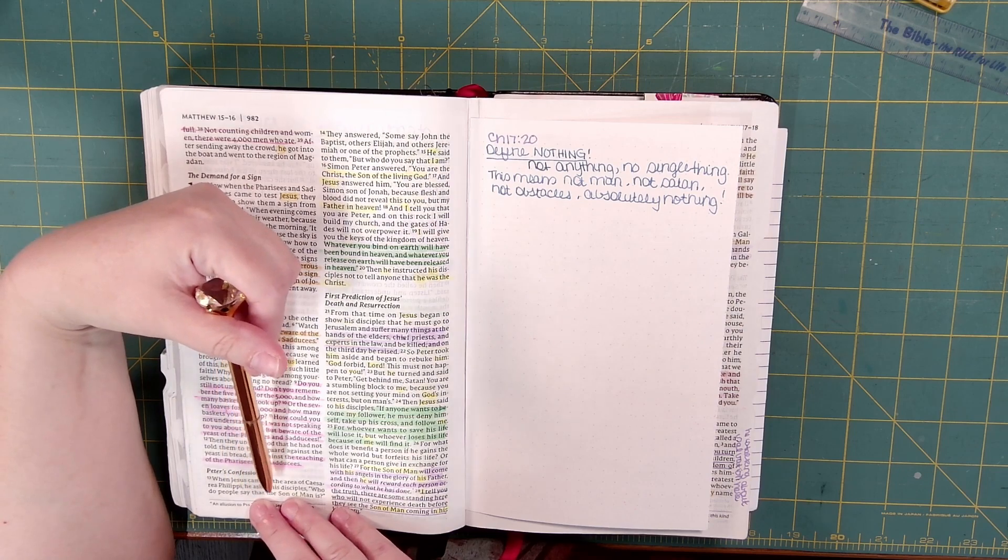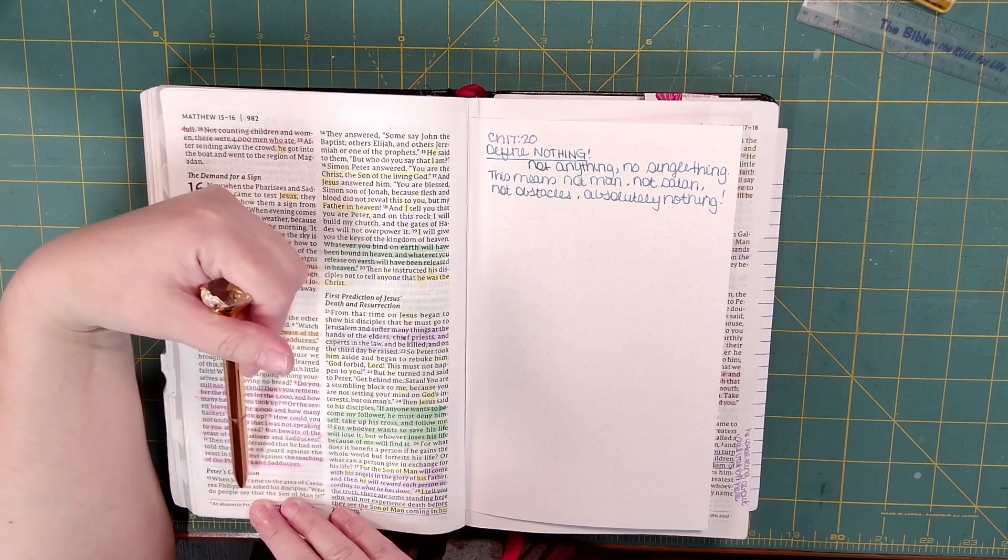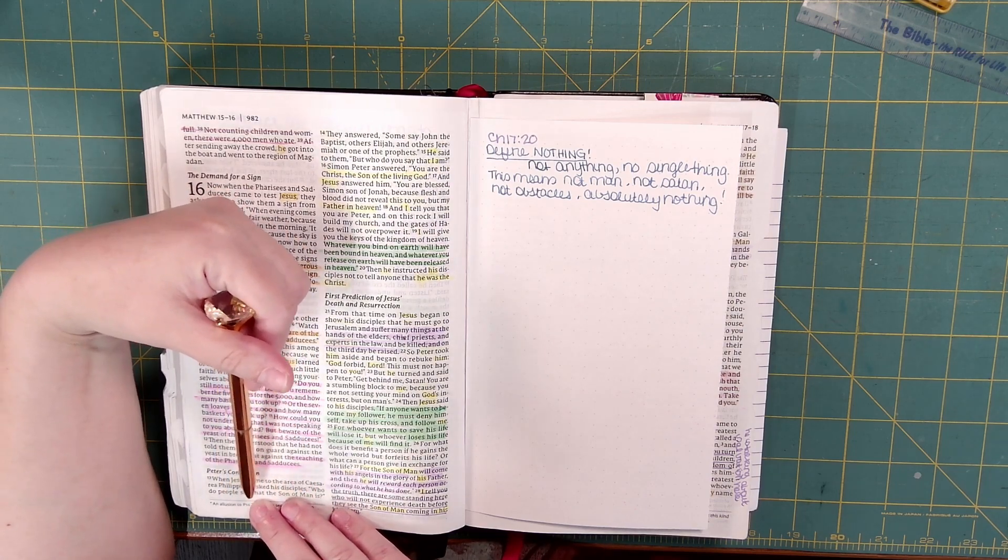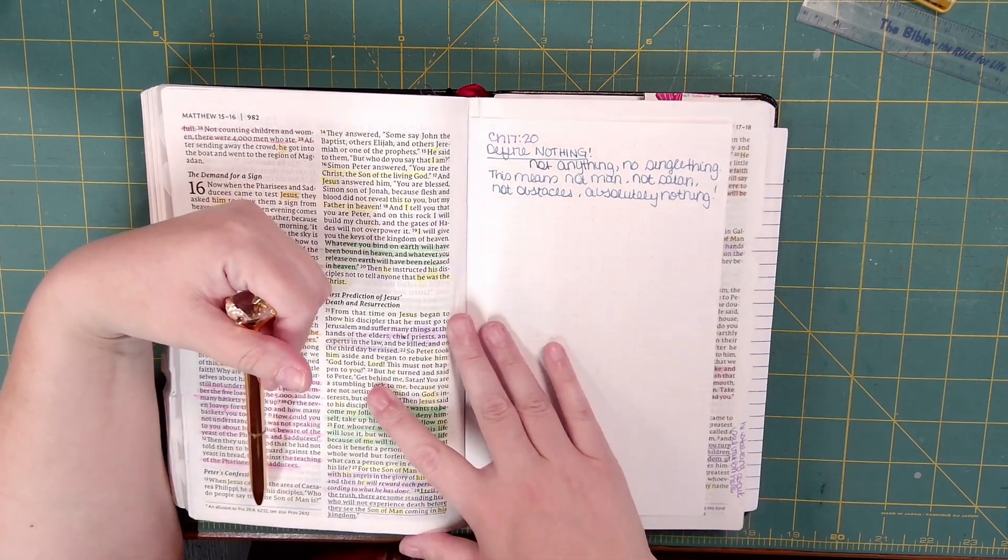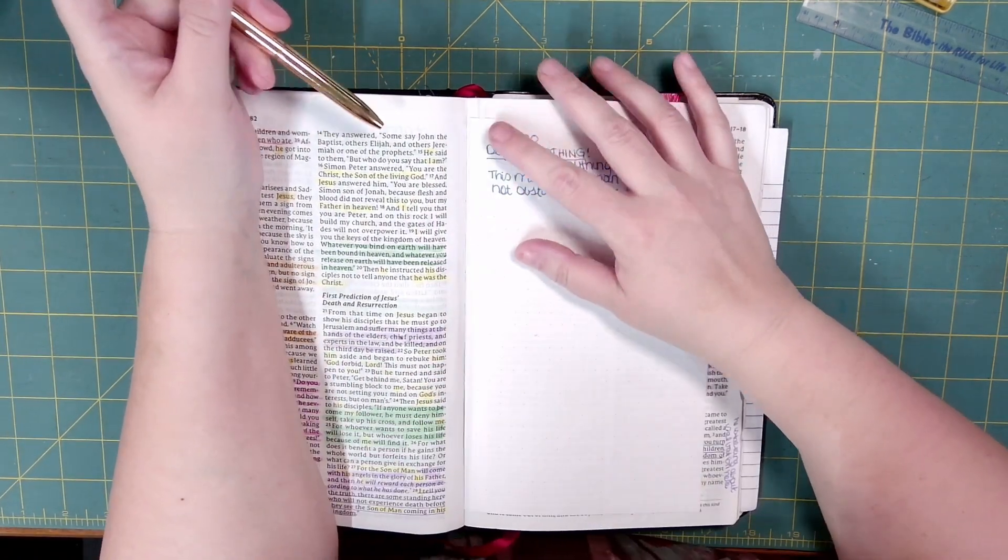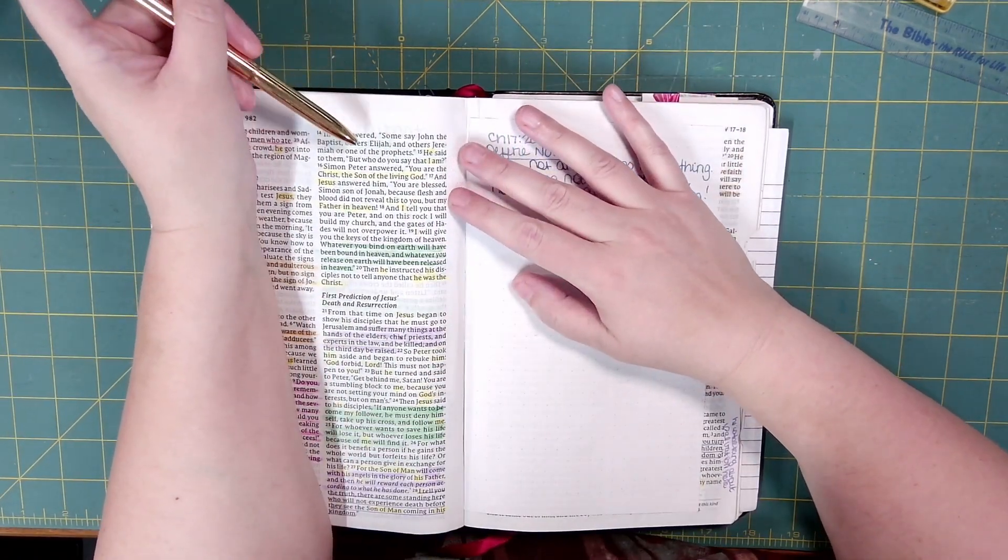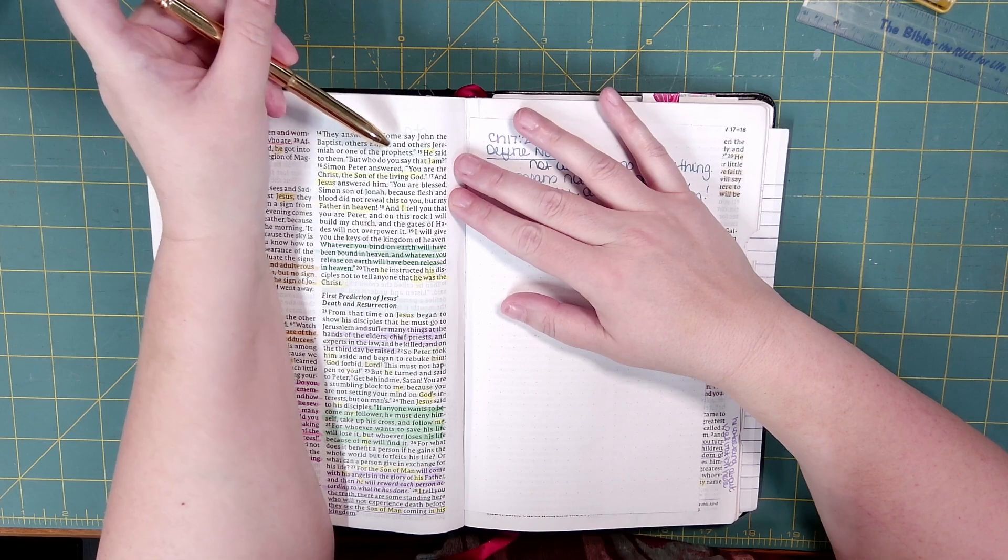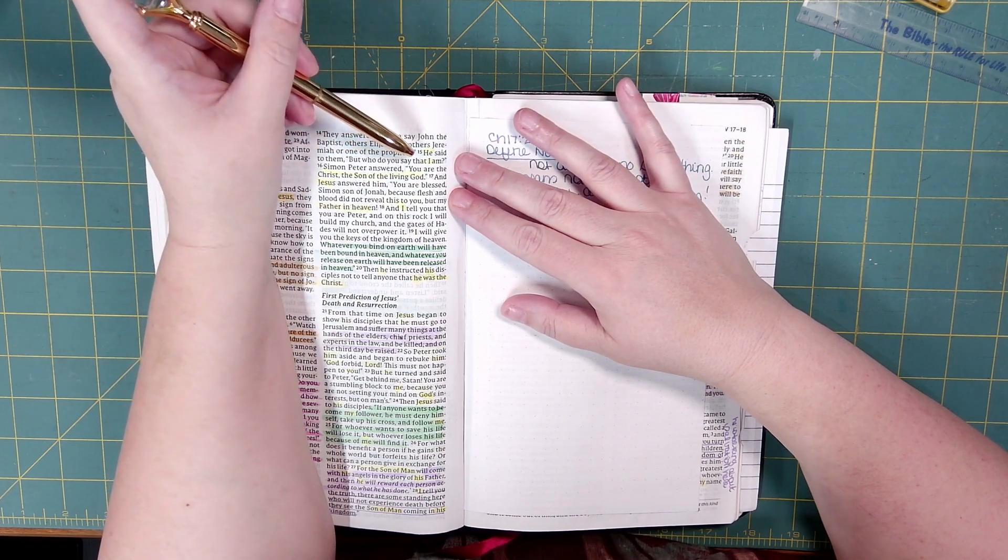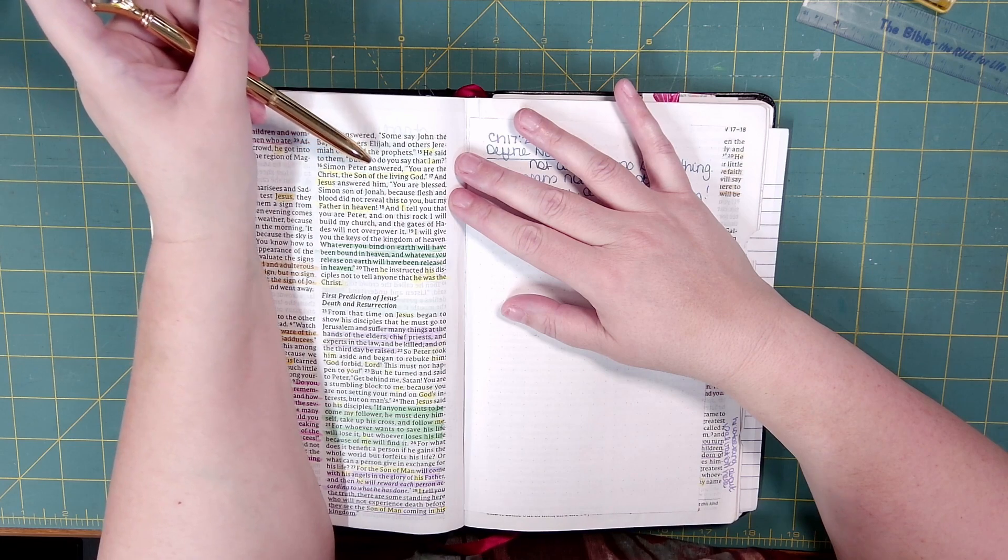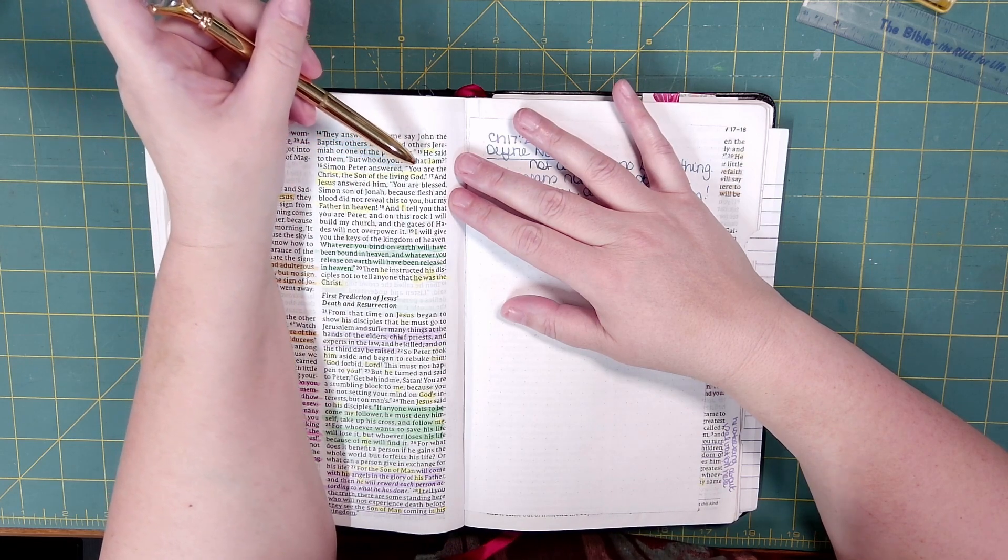When Jesus came to the area of Caesarea Philippi, he asked his disciples, Who do people say that the Son of Man is? They answered, Some say John the Baptist, others Elijah, and others Jeremiah, or one of the prophets. He said to them, But who do you say that I am?